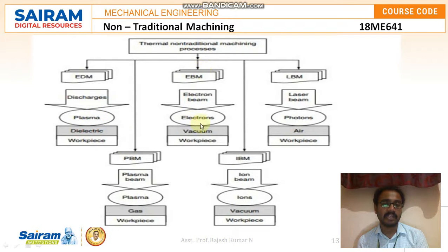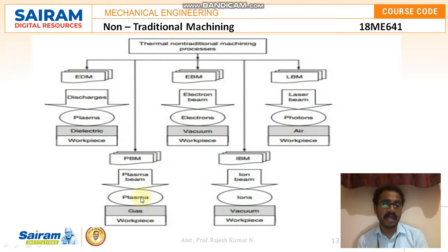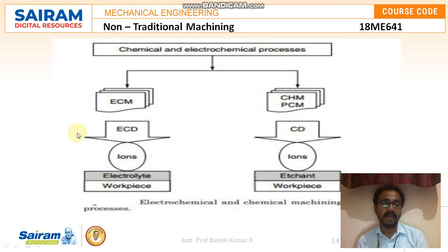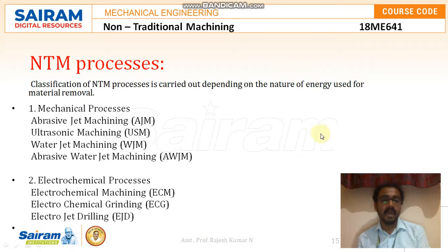In electrical discharge machining, plasma dielectric is used. In electron beam machining, electrons work in a vacuum to remove excess material. In laser beam machining, a laser beam using photons in an air medium removes excess material. In plasma beam machining, plasma is the source in gas medium. In ion beam machining, ions are the source and excess material is removed through vacuum. For chemical and electrochemical processes: electrochemical machining uses electrolyte as the medium, and chemical machining uses an etchant as the medium to remove excess material.